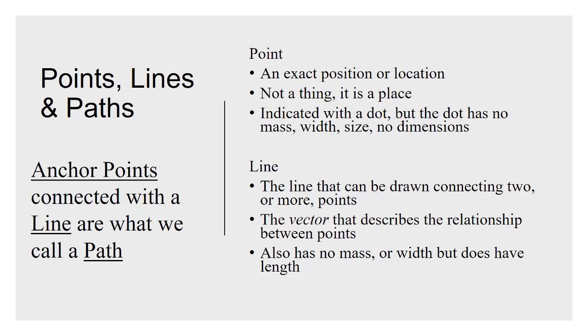A line is the path that connects two or more points, so it's a vector. That's the actual mathematical term—the vector between those two points describes the relationship between them: the angle, the distance, all those things. It also does not have any mass or width, but it does have length, so that length is determined by the distance between points. This is purely a mathematical description of what a path really is.